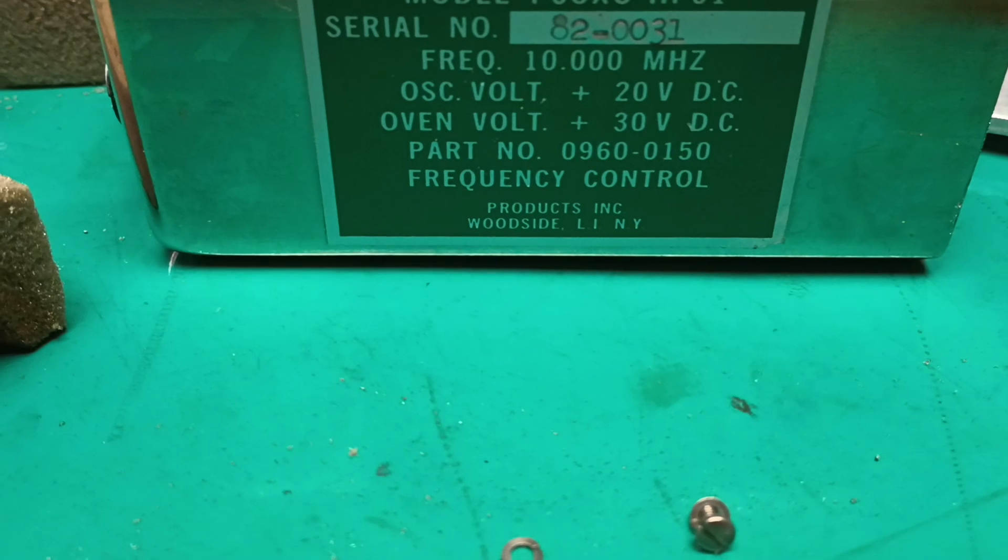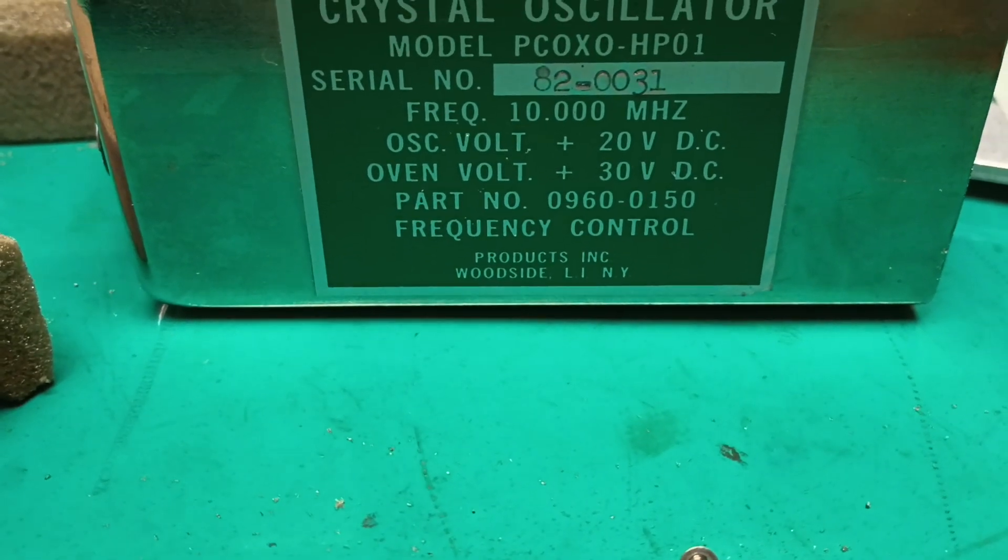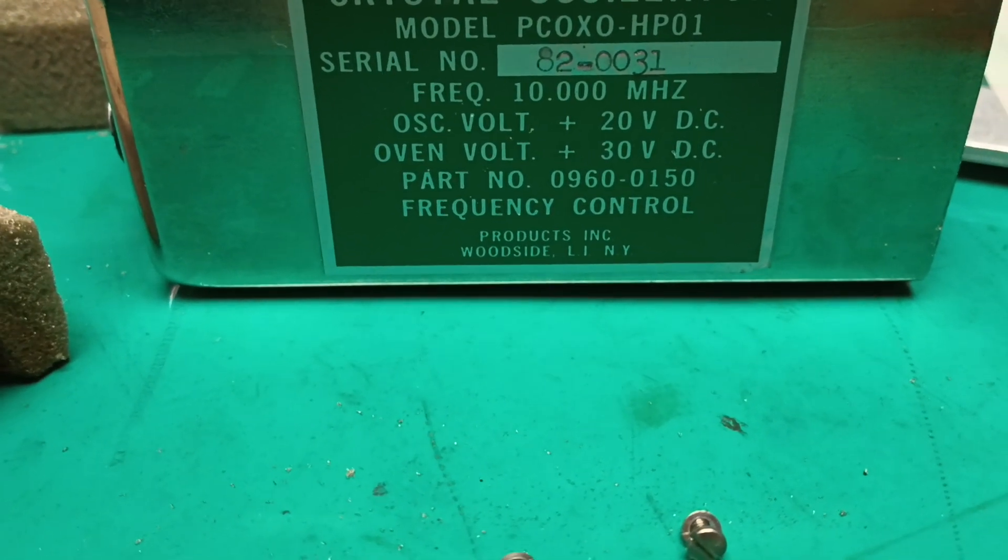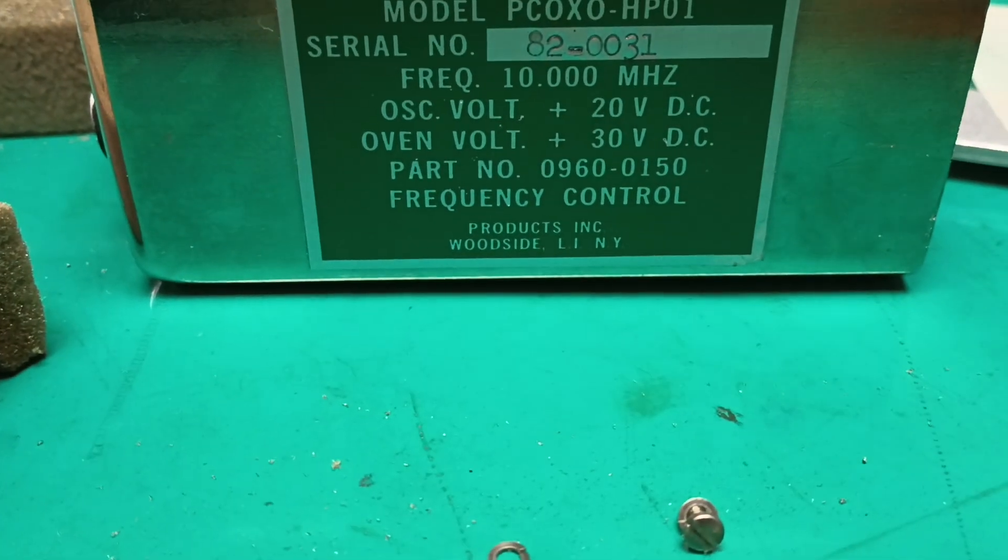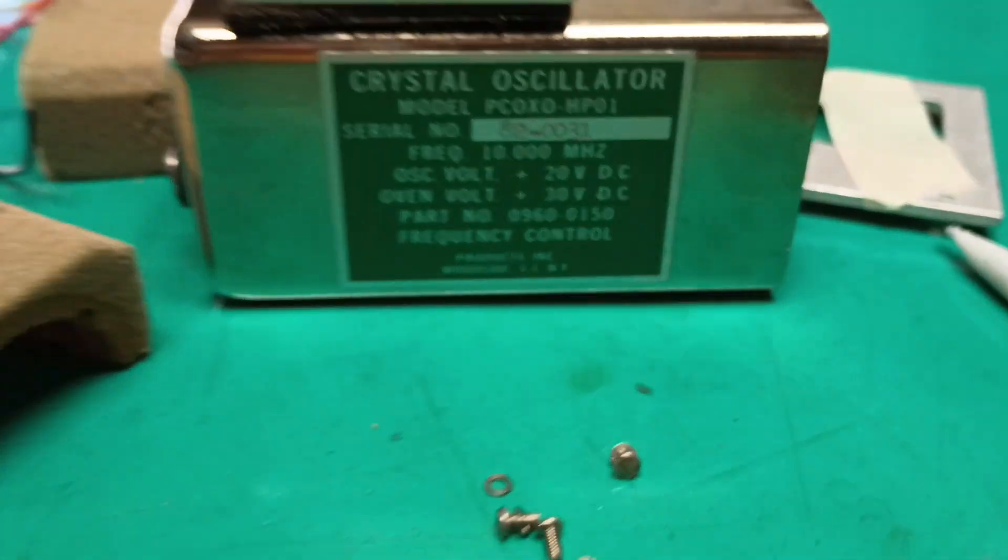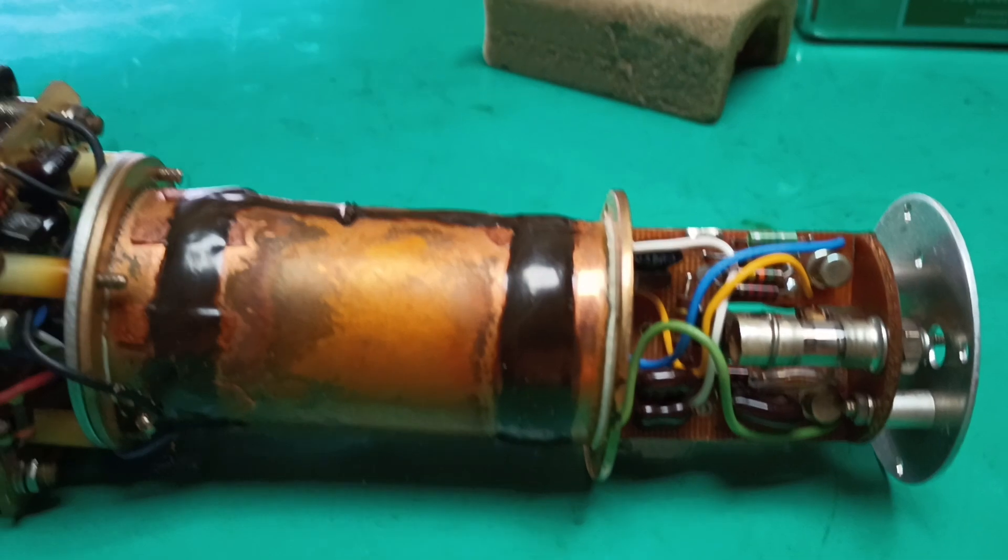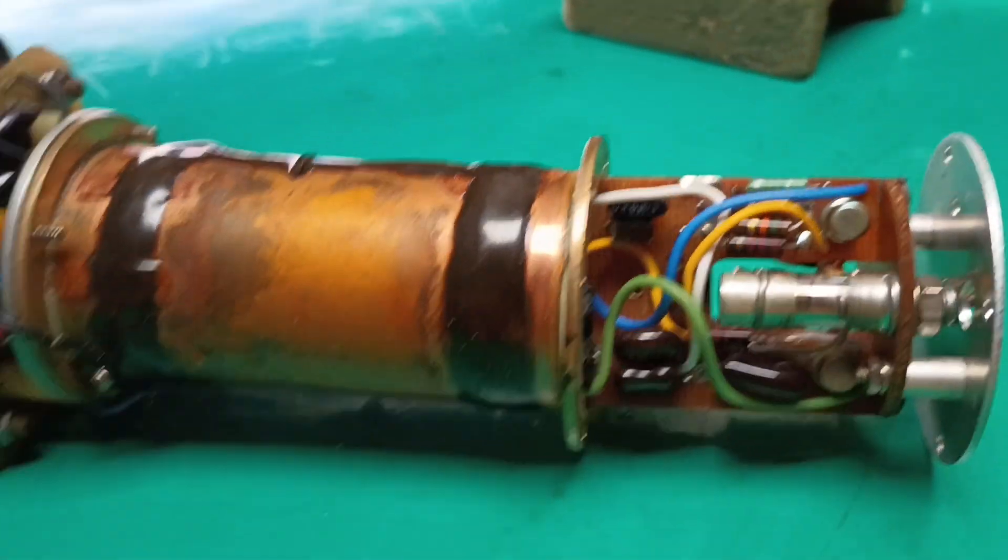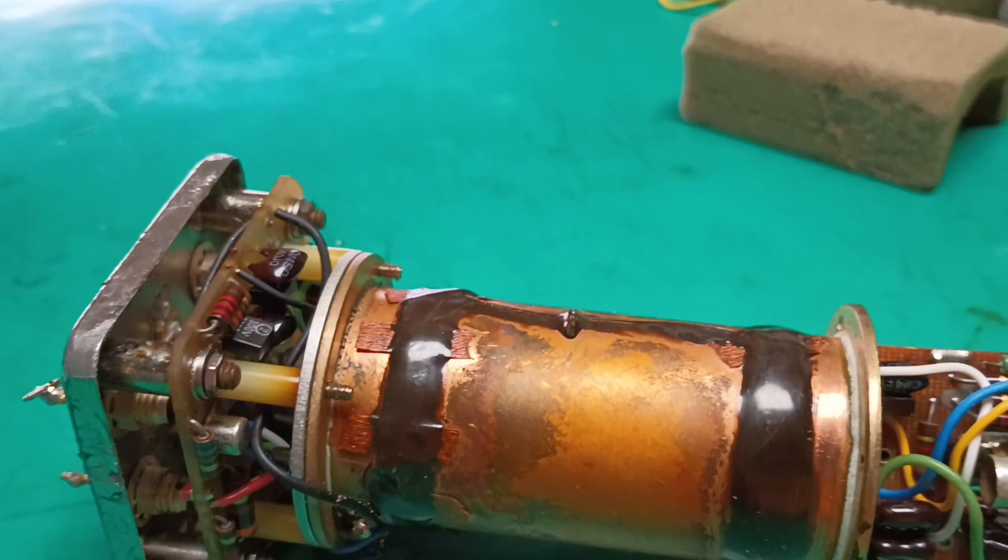Part 2 of the HP 10 MHz ovenized oscillator unit, model 960-0150, showing the inside. Apologies for the miserable quality video, but here's the guts.